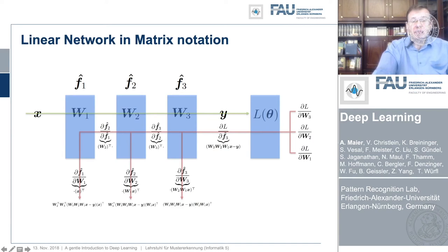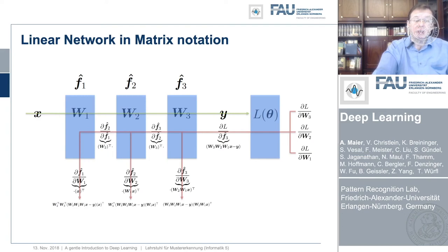For the update of the last layer, you compute the partial derivative of the loss times the partial derivative of the last layer with respect to its weights. For the second-to-last layer, you also need the partial derivative of the last layer with respect to its inputs, and so on back to the first layer. Crucially, you can pre-compute many of those intermediate values and reuse them, which allows us to implement backpropagation very efficiently.